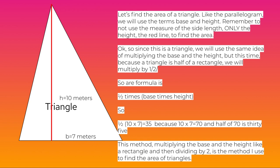Okay, so since this is a triangle, we will use the same idea of multiplying the base and the height. But this time, because a triangle is half of a rectangle, we will multiply it by one half. So our formula is one half times base times height. So we see one half times 10 times 7 equals 35, because 10 times 7 equals 70 and half of 70 is 35.